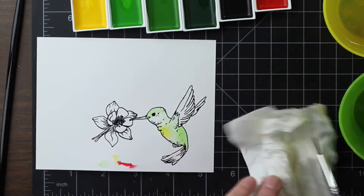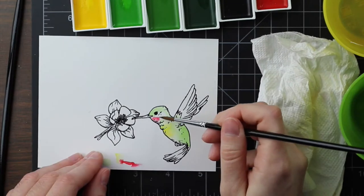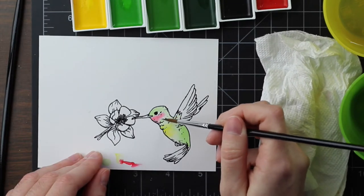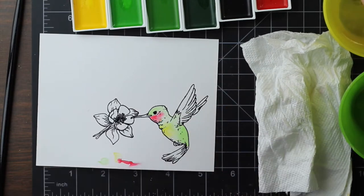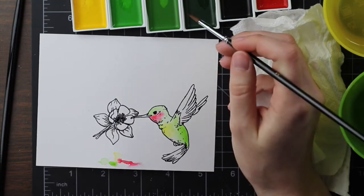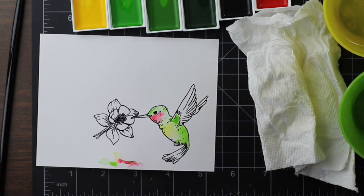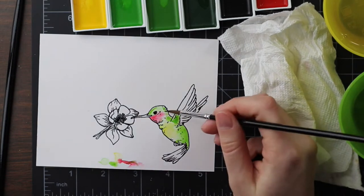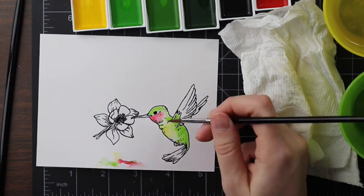So I'm using Gansai Tambi watercolors and I just think watercoloring is fun. I just find it really interesting. I don't really know what I'm doing all the time. So this is the process of me coloring the hummingbird. I may or may not be doing it correctly according to some other watercolorists who've been doing it for years, but this is how I color it.